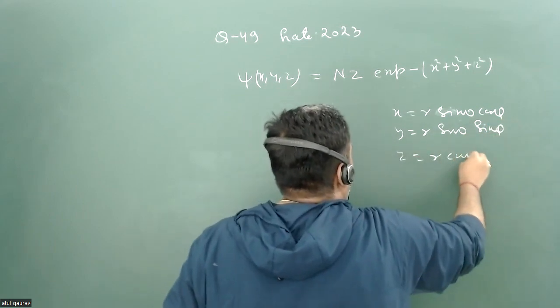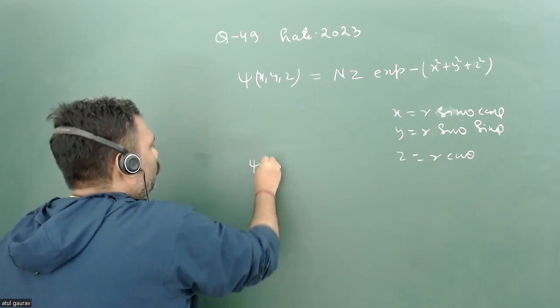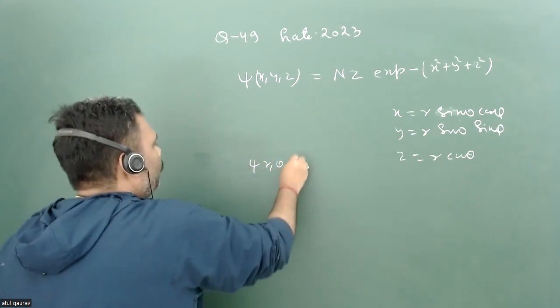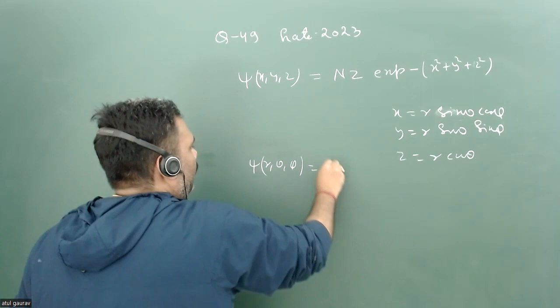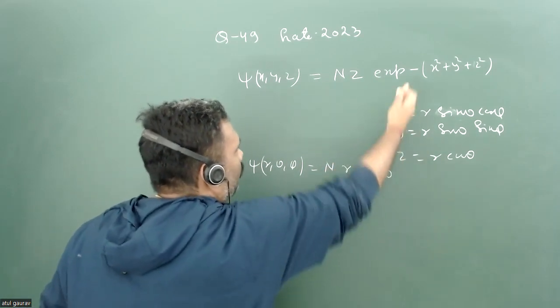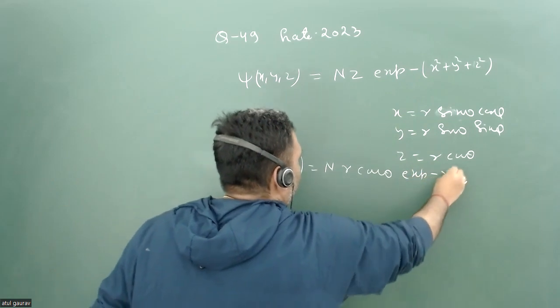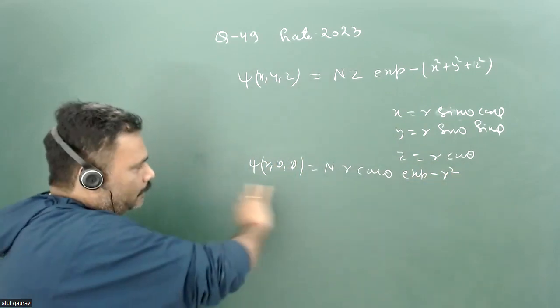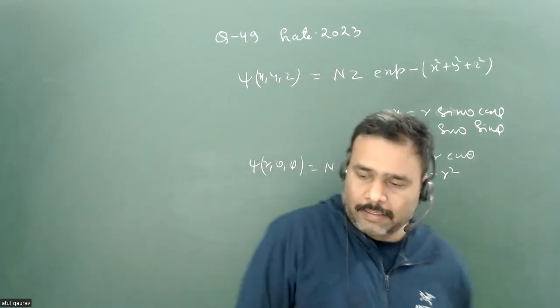Y equals r sin theta sin phi, and z equals r cos theta. When we are going to replace it with r, theta, and phi, we have N times r cos theta. X square plus y square plus z square is nothing but exponential minus r square. So this is our wave function in spherical polar coordinates.